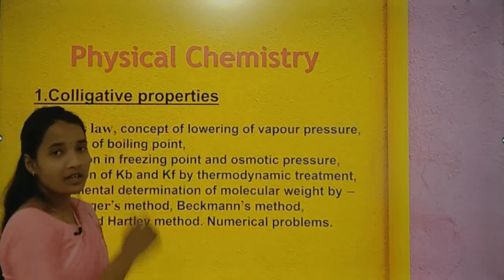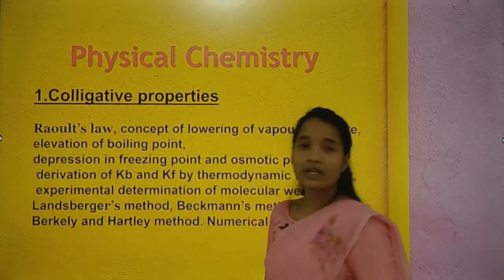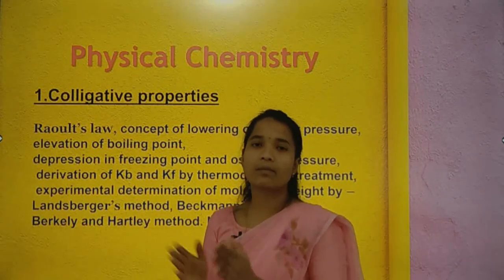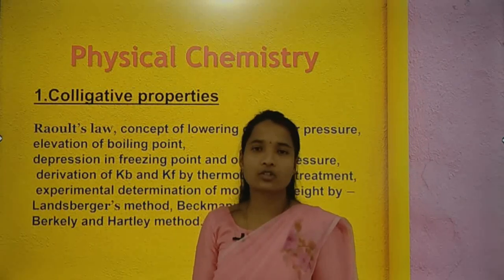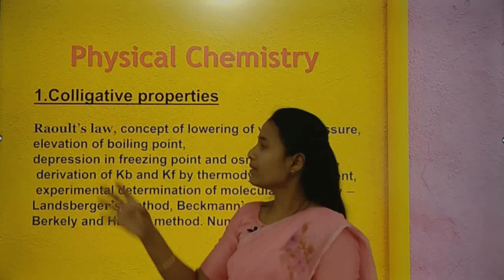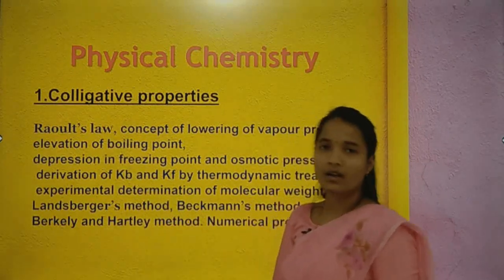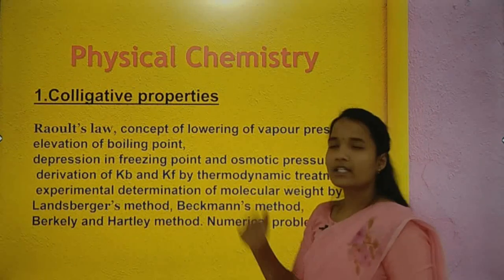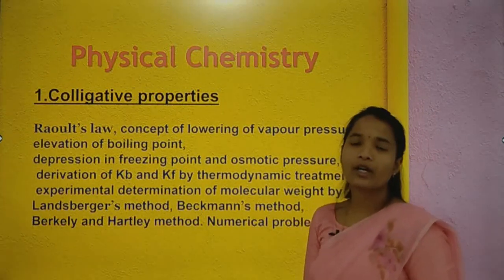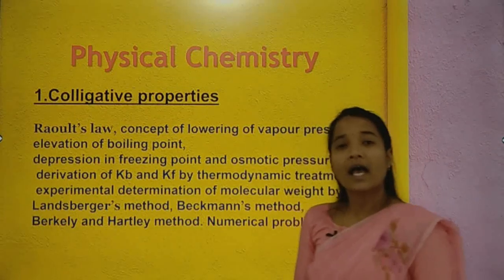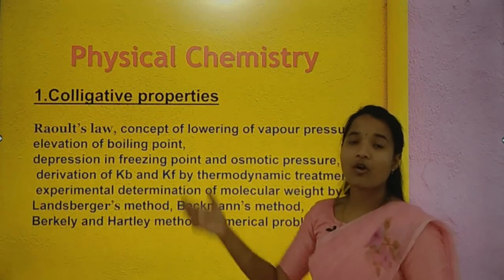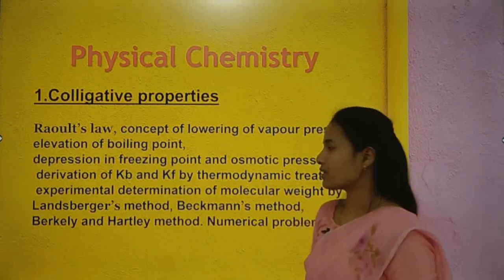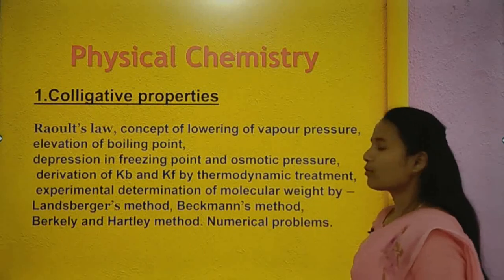From the physical chemistry section, the first chapter is colligative properties — properties that depend on the number of solute particles, not on the nature of the solute. Learning points include Raoult's law, lowering of vapor pressure, elevation of boiling point, depression of freezing point, and derivation of Kb (ebullioscopic constant) and Kf (cryoscopic constant) using thermodynamic treatment.